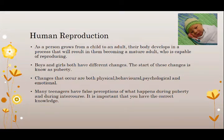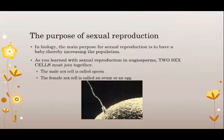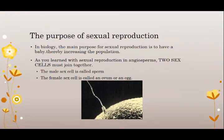It is very important that you have the correct knowledge about what happens during puberty. The main purpose of sexual reproduction is to have a baby, thereby increasing the population. As with sexual reproduction in angiosperms, two sex cells must join together to form a new human being. The male sex cell is called sperm and the female sex cell is called an ovum or an egg. You can see in the image on the slide a sperm that is fertilizing an egg.